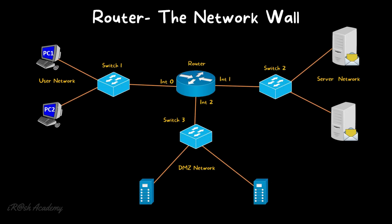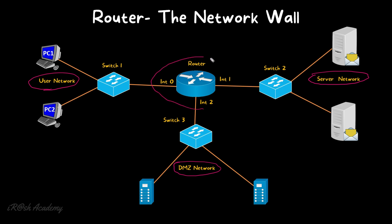As we can see on the screen, multiple networks are connected with a single router. There is a user network where all user computers are connected, linked to interface 0 of the router. The server network, hosting all server infrastructure, is connected to interface 1. The DMZ network, where application servers, web servers, and internet-facing servers are connected, is linked to interface 2 of the router.